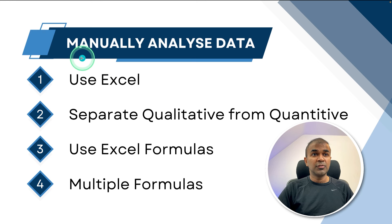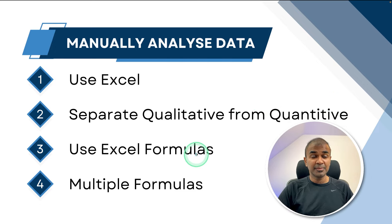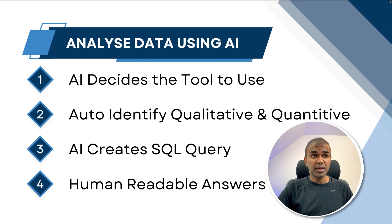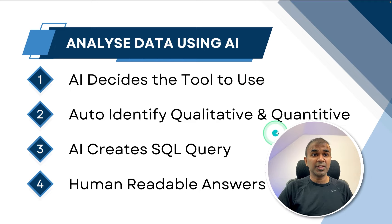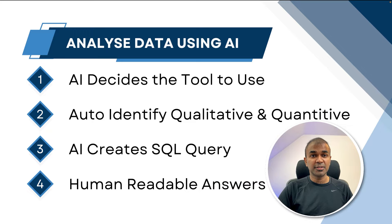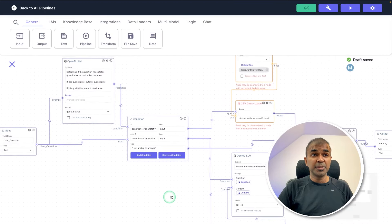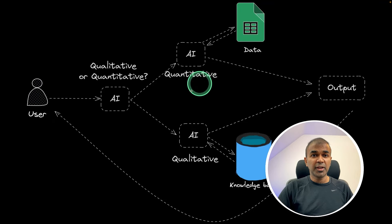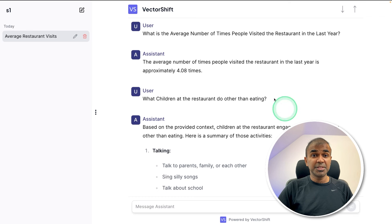Now we need to analyze this data. If you're manually analyzing, you need to separate qualitative from quantitative data, then use formulas to analyze it, and for each question you need different formulas. But using the power of AI, it can decide whether to do a SQL query or a knowledge-based query, automatically identify question type, create SQL queries, and respond with human-readable answers. I'm going to take you through step by step how to build the same pipeline in VectorShift, go through every component, and finally publish it as a chatbot.